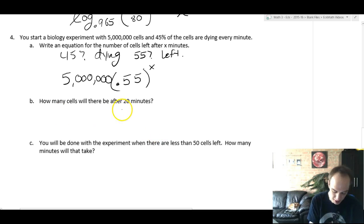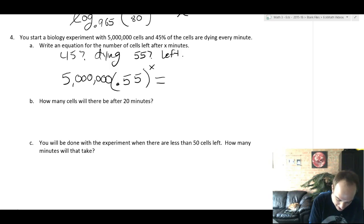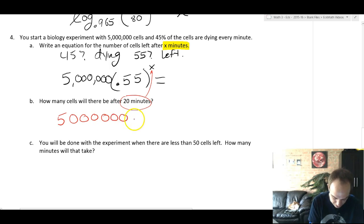How many cells will there be after 20 minutes? This problem is a little tricky. Look back at the problem. It tells you that x represents the number of minutes. So unlike every other problem on this page, you're going to plug in 20 for x. So you'll do 5 million times 0.55 to the 20th to get the number of bacteria left.